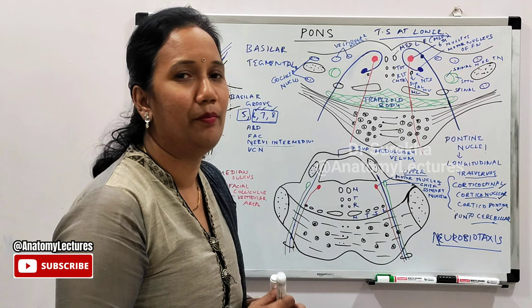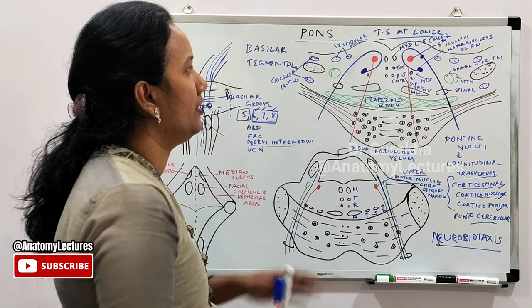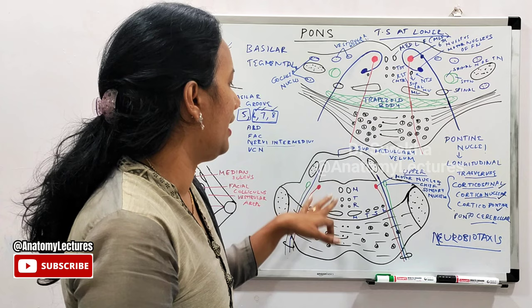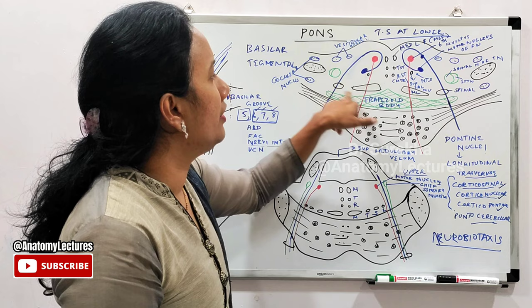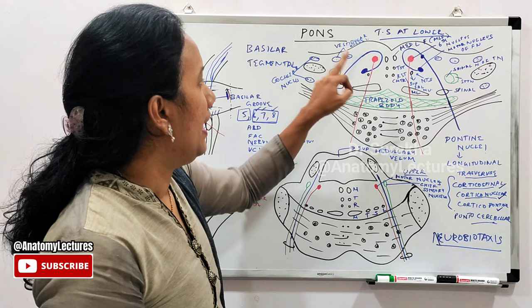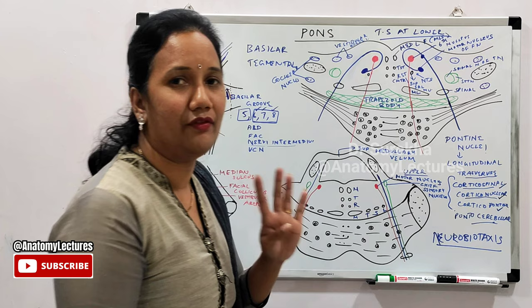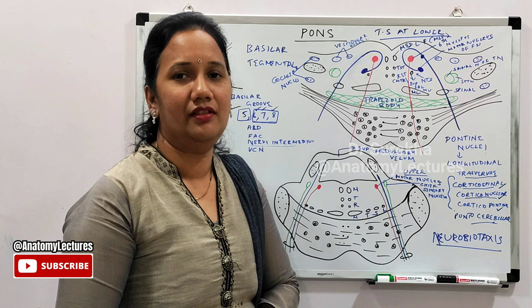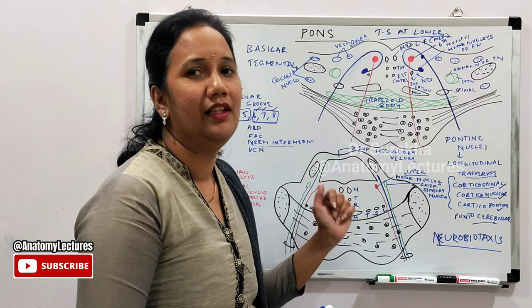Major differences between the lower and upper level sections: at the lower level we have 6th, 7th, and 8th cranial nerve nuclei; at the upper level only the 5th cranial nerve nuclei. At the lower level there is a trapezoid body; at the upper level there is none. At the lower level there are only 2 lemnisci; at the upper level there are 4 lemnisci.